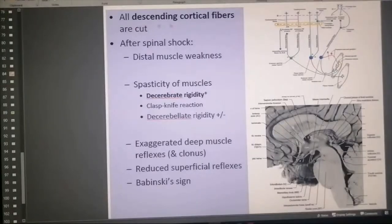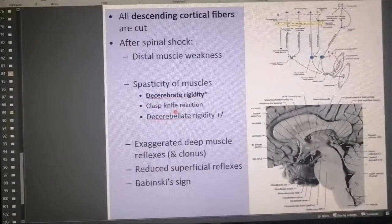Decerebration: all descending cortical fibers are cut, including the rubrospinal tract. After spinal shock there will be distal muscle weakness and spasticity of the muscles. The pattern will be decerebrate rigidity, not decorticate rigidity, so all the muscles will go into extension. Clasp knife reflex occurs by overactivity of the gamma efferents.